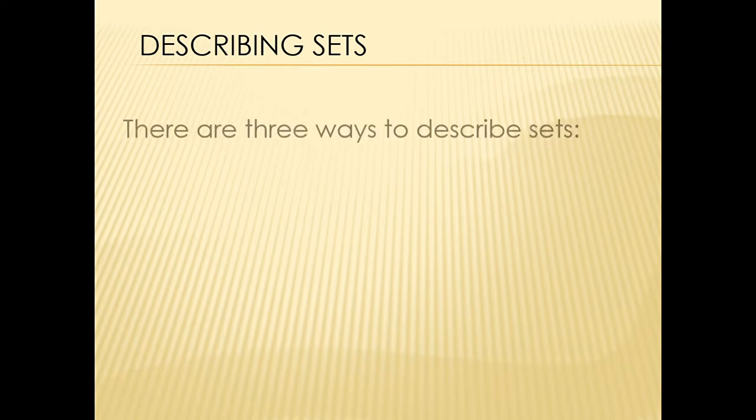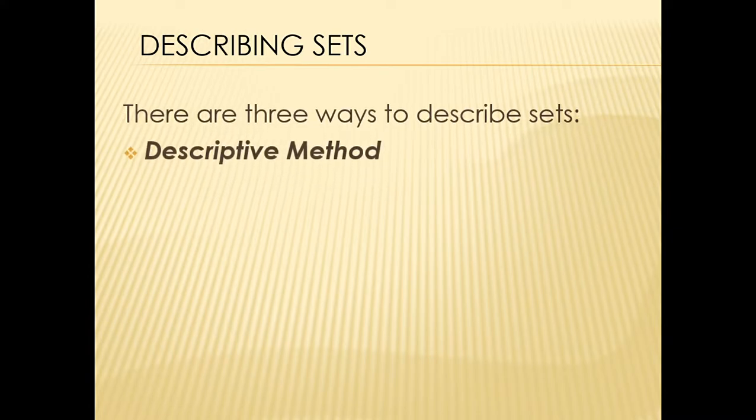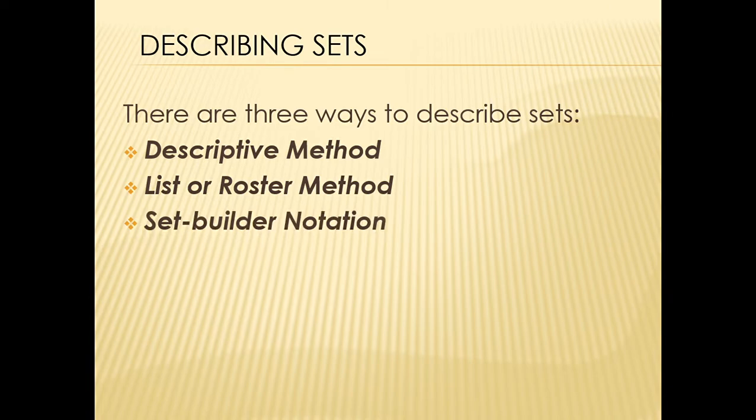Next, we have three ways on how to describe sets. The first one is what we call the descriptive method, the second is the list or roster method, and the last one is what we call the set builder notation.